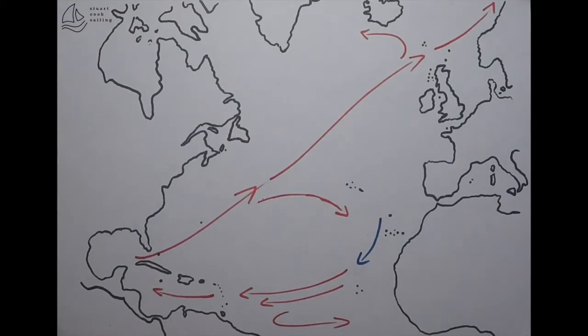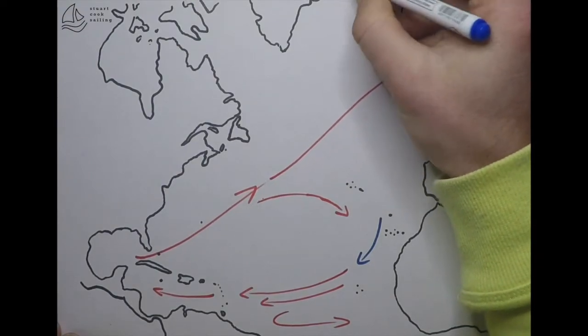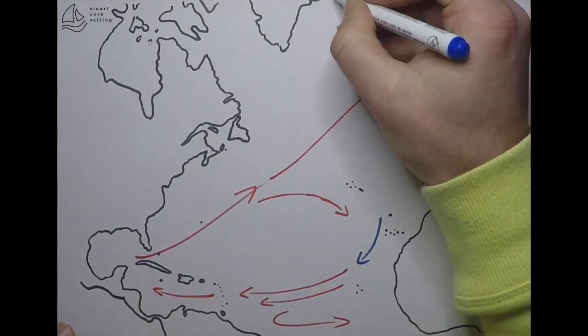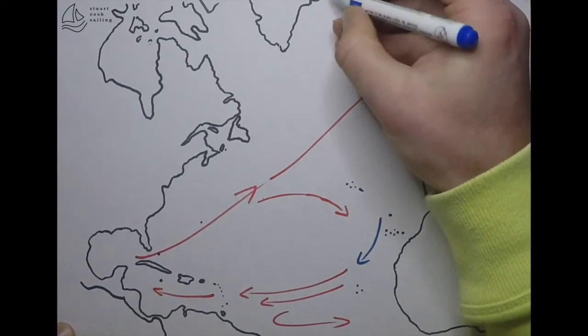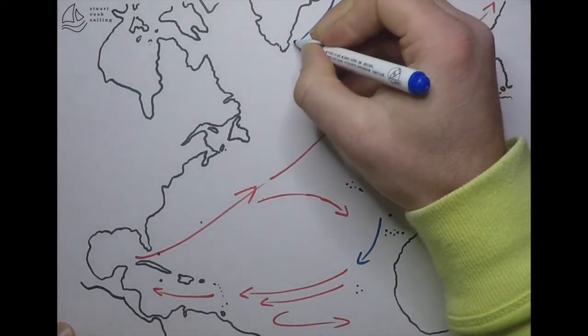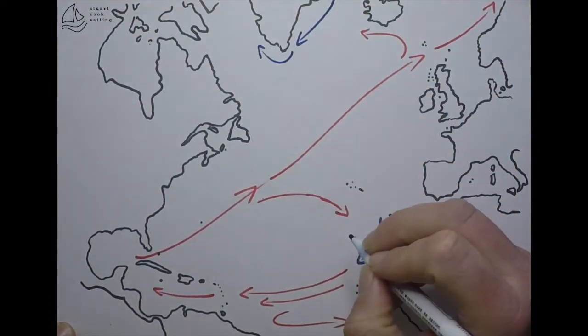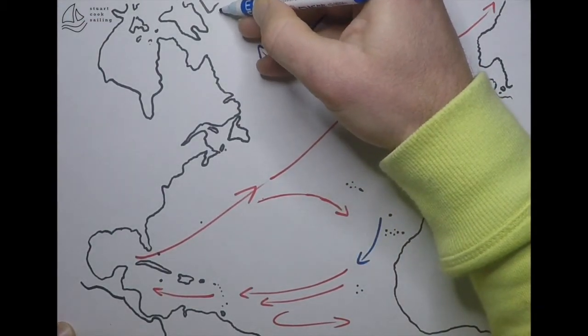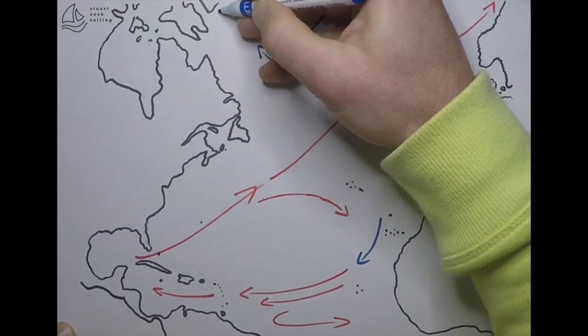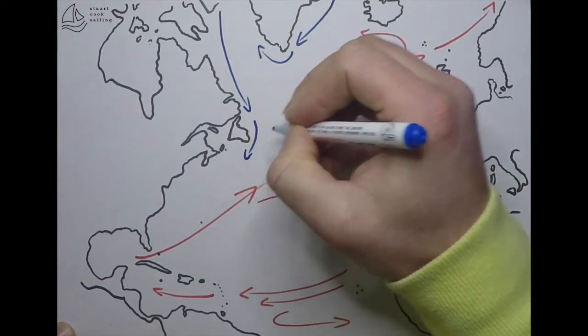We also have a couple more cold currents coming down from the polar regions. First, with those northeasterly winds, we have the East Greenland current, which circles around the bottom of Greenland. Then we have the Labrador current getting pushed down out of the Arctic, and it feeds down here.